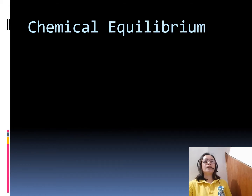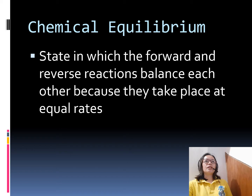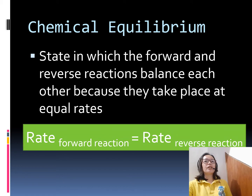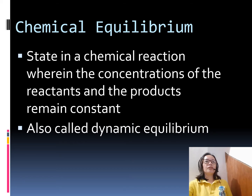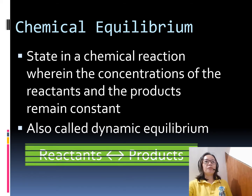What do we mean by chemical equilibrium? It states that the forward and the reverse reaction balance each other because they take place at equal rates. So the rate of the forward reaction equals the rate of the reverse reaction. Also, chemical equilibrium is a state in a chemical reaction wherein the concentration of the reactants and the products remain constant — they do not change. So it is also called dynamic equilibrium.